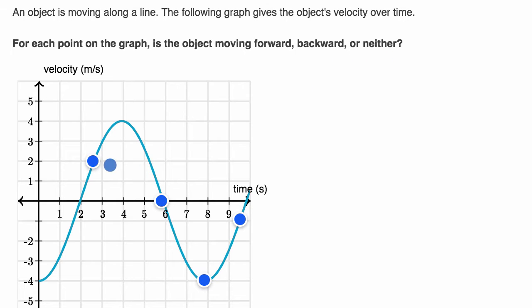All right, now let's do this together. We can see these different points on this velocity versus time graph. The important thing to realize is, if the velocity is positive, we're moving forward. If the velocity is negative, we're moving backward. And if the velocity is zero, we're not moving either forward nor backwards.